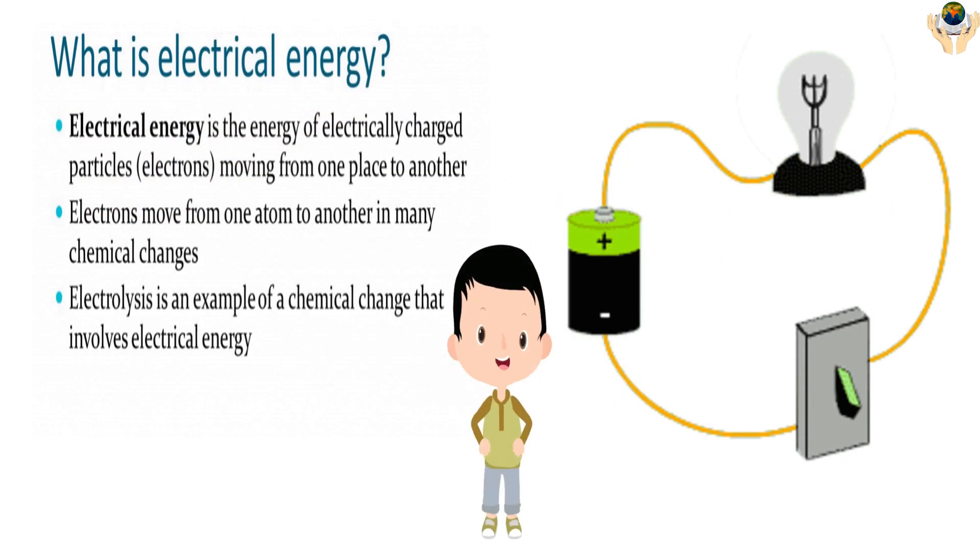Electrical energy. Electrical energy is the energy of electrically charged particles moving from one place to another. Electrons move from one atom to another in many chemical changes. Electrolysis is an example of a chemical change that involves electrical energy.